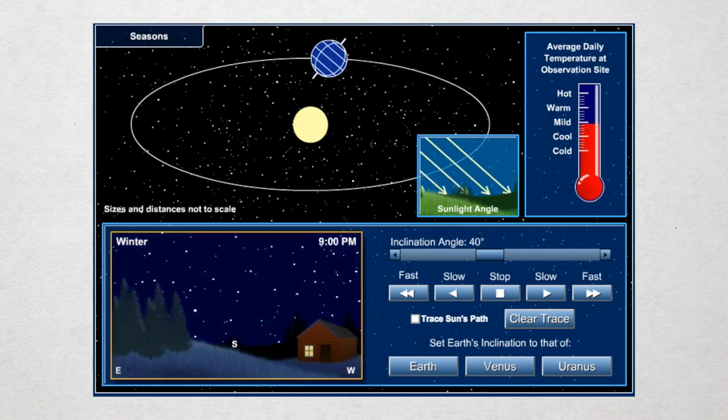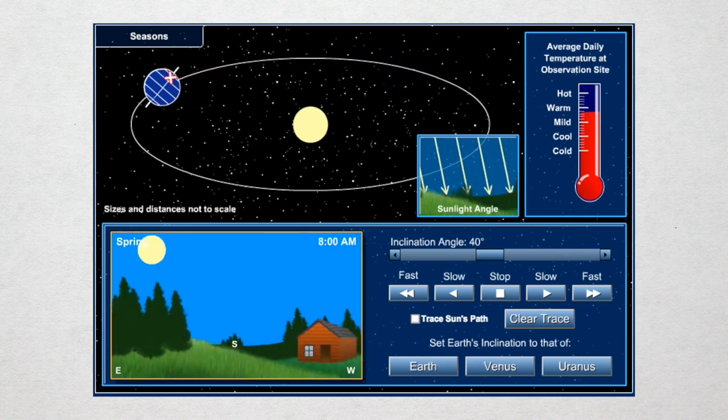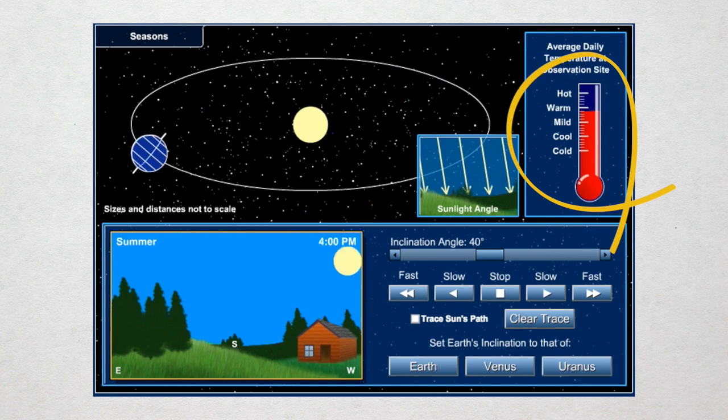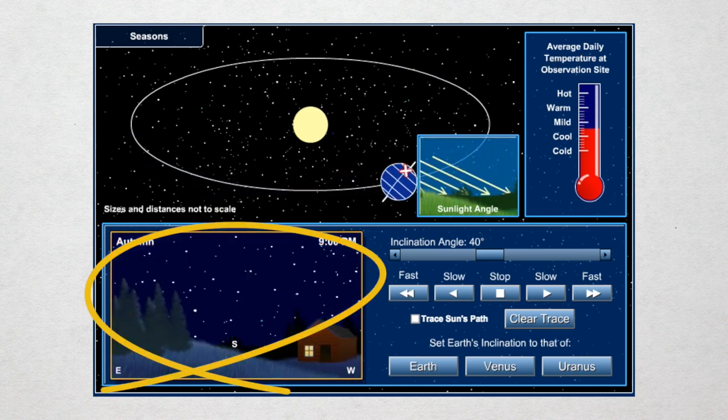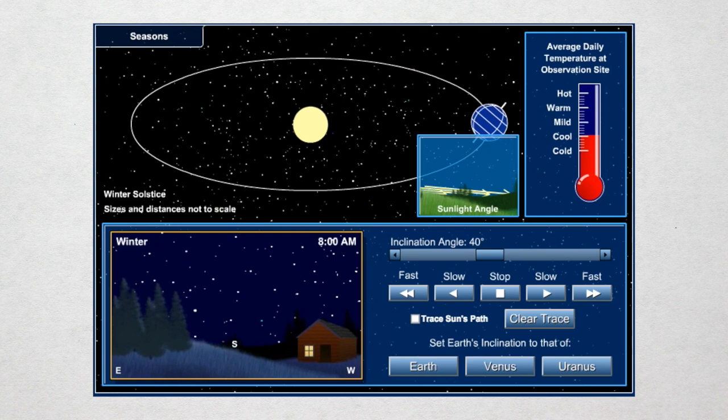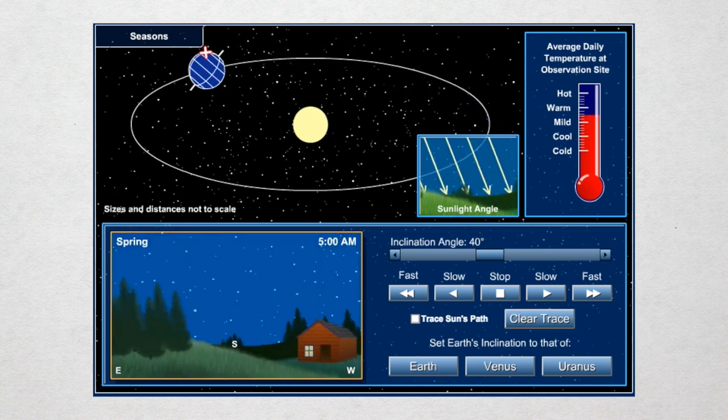Here's a year on a world tilted at 40 degrees. Note the wider temperature swings and the differing path the sun takes as compared with the earlier simulations of Earth. All in all, a 40 degree world would be a pretty weird place to live. But it gets weirder.